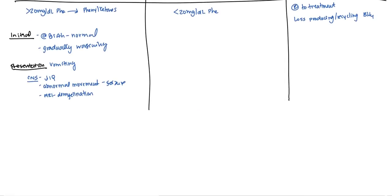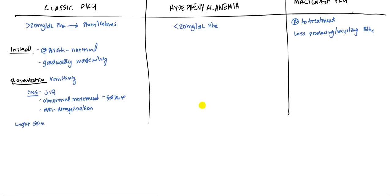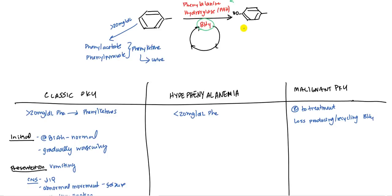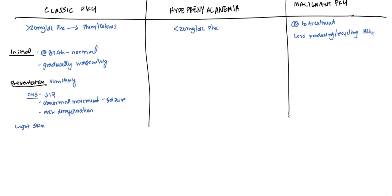Also, there is going to be some other findings. The skin is going to be very light. Because if you remember, phenylalanine gives you tyrosine, which then goes on to make melanin. So they kind of have albinism. And so not only light skin, but light eyes, and they tend to have hair loss.